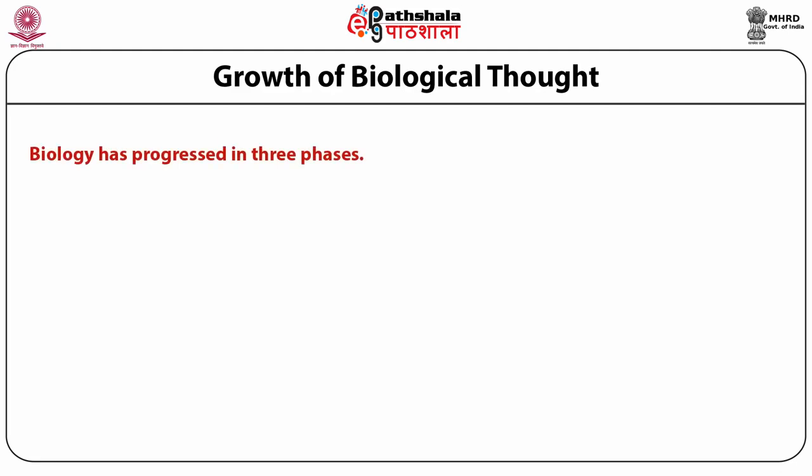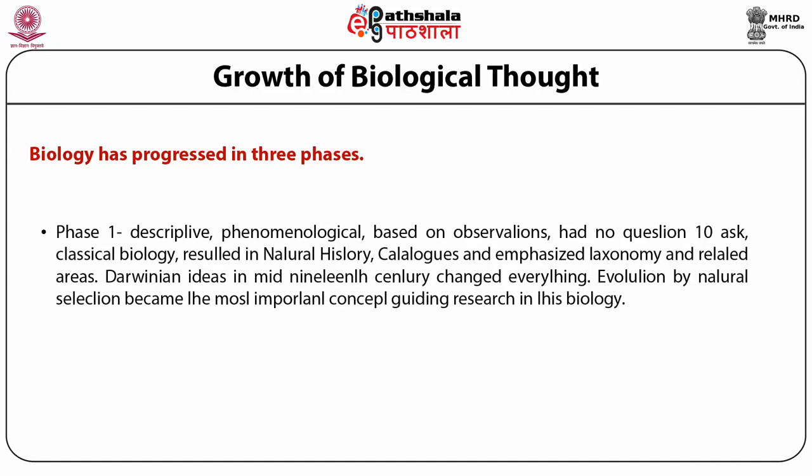We call this the growth of biological thought. Phase one was essentially descriptive — it is also called as phenomenological biology, based on observations. Observations are made with your eyes, or later a magnifying lens, or later with a microscope. There was no question to ask, and therefore it was called classical biology. It resulted in the natural history of all the living organisms on this earth. As a result of such observational undertaking, catalogues and classification of organisms — taxonomy — and such areas were developed. This went on till the middle of the 19th century.